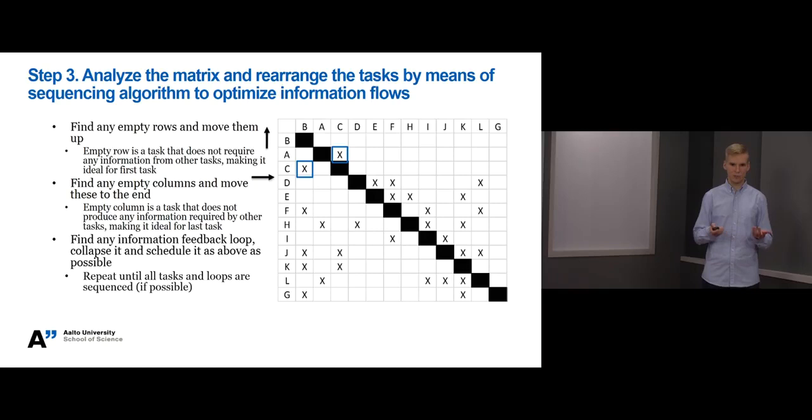First, we can identify that task C requires information from task B and provides information to task A. In turn, task A is dependent on the information from task C, but task A does not produce information to task C. So, we should move task C up before task A.